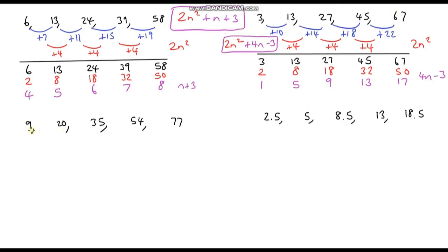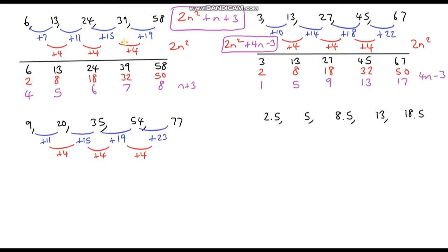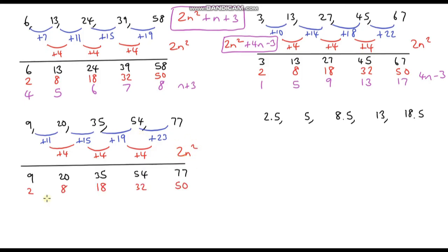Now onto the next one. Let's first work out the first difference between each of these numbers, and now let's work out the second difference. I had a feeling it would be similar to the first one — I didn't do this on purpose, it was purely coincidental. And yes, it is exactly the same as our previous two questions. So our nth term is going to start with 2n squared, and I'm going to copy down my original sequence and write down the 2n squared sequence alongside it.